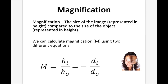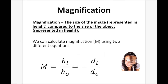Magnification is the size of the image represented in height compared to the size of the object represented in height. We can calculate magnification using three equations: M equals HI over HO; M equals negative DI over DO; and HI over HO equals negative DI over DO.